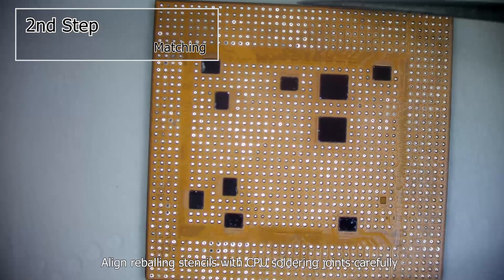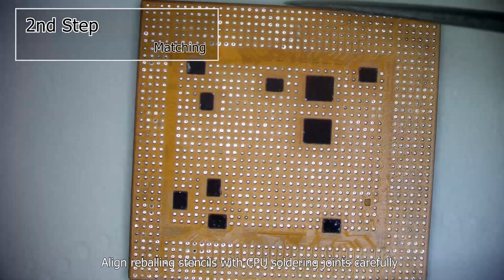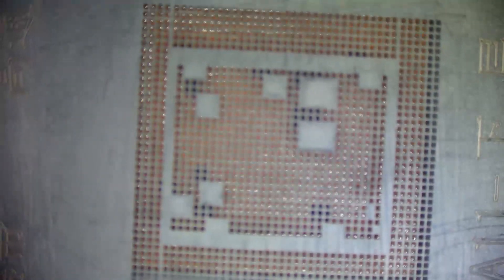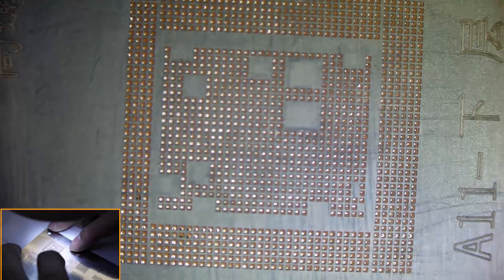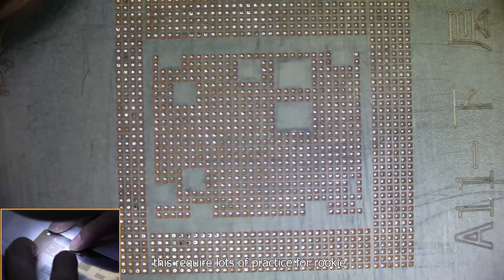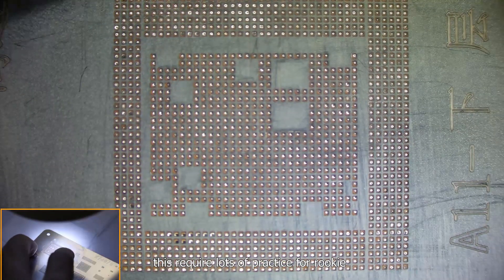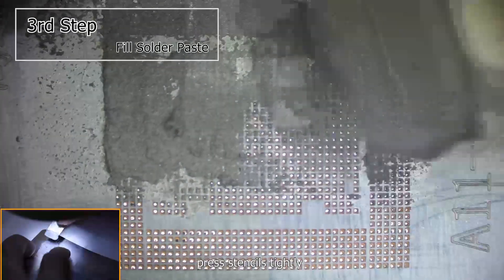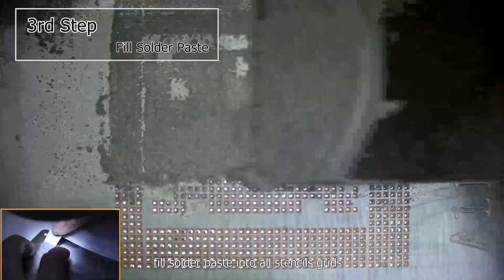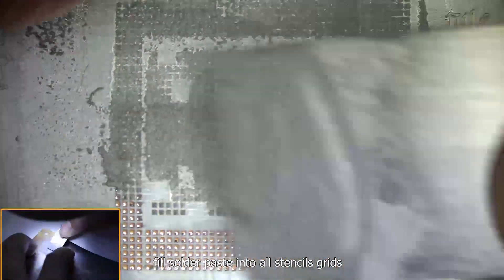Align reballing stencils with the CPU solder joints carefully. This requires lots of practice for rookies. After humidity adjusting, press stencils tightly. Fill solder paste into all stencil grids evenly with metal scraper, and scrape to appropriate thickness.